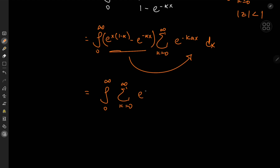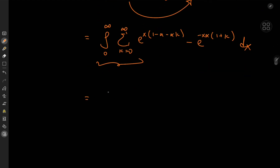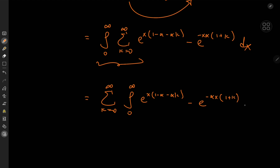Factoring out the exponents, the integral becomes the sum over k from 0 to infinity of the integral from 0 to infinity of e^(x(1 - alpha - alpha k)) minus e^(-alpha x(1 + k)) dx. Since there are no convergence issues, we can switch the order of the sum and integral operators.